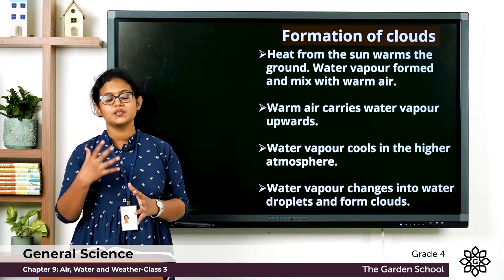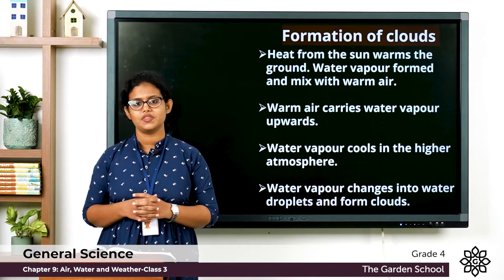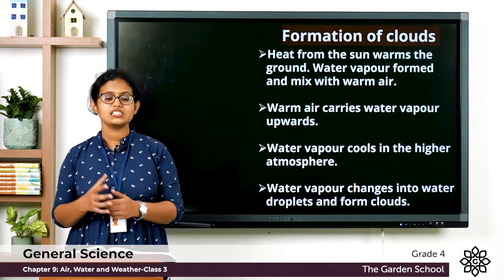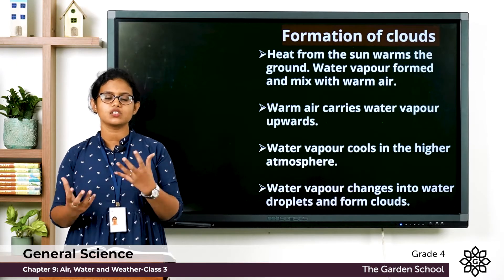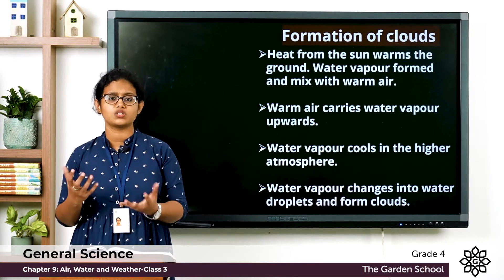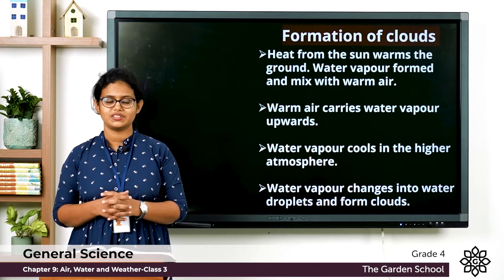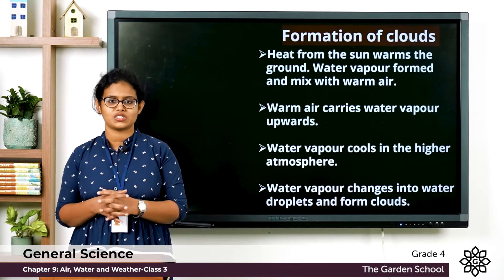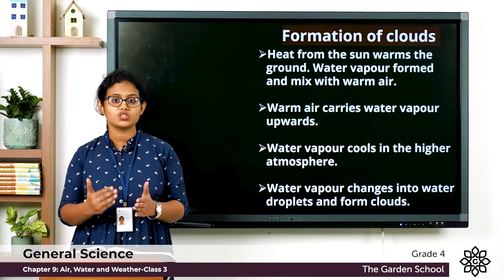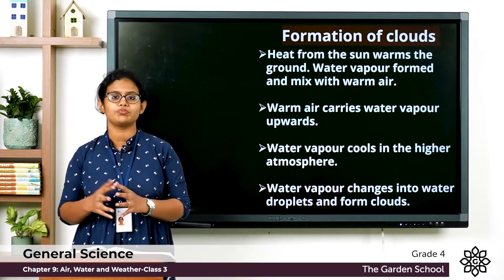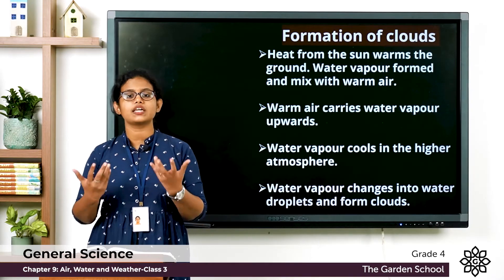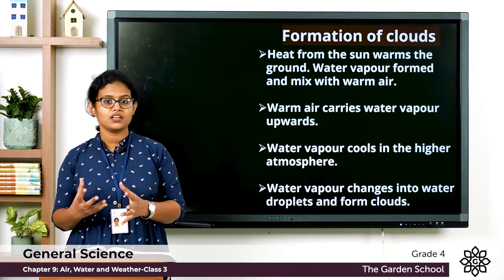The sun produces heat, and the heat from the sun warms the earth. As a result, water from the ocean, lake, and pond changes into water vapor. The process by which water changes into water vapor is called evaporation.